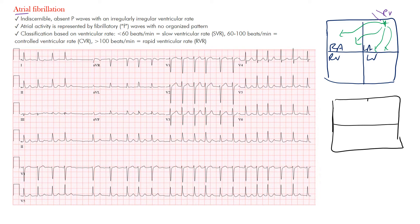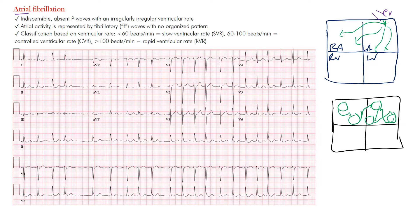Another mechanism is multiple wavelets. You can imagine circular wavelets throughout the atria, going within and out of each other, constantly circling — and that just continues. Aside from those mechanisms, there also has to be an inciting event, usually a premature atrial contraction that sets it off. So you need an inciting event and a substrate — something that can maintain the atrial fibrillation so it continues.